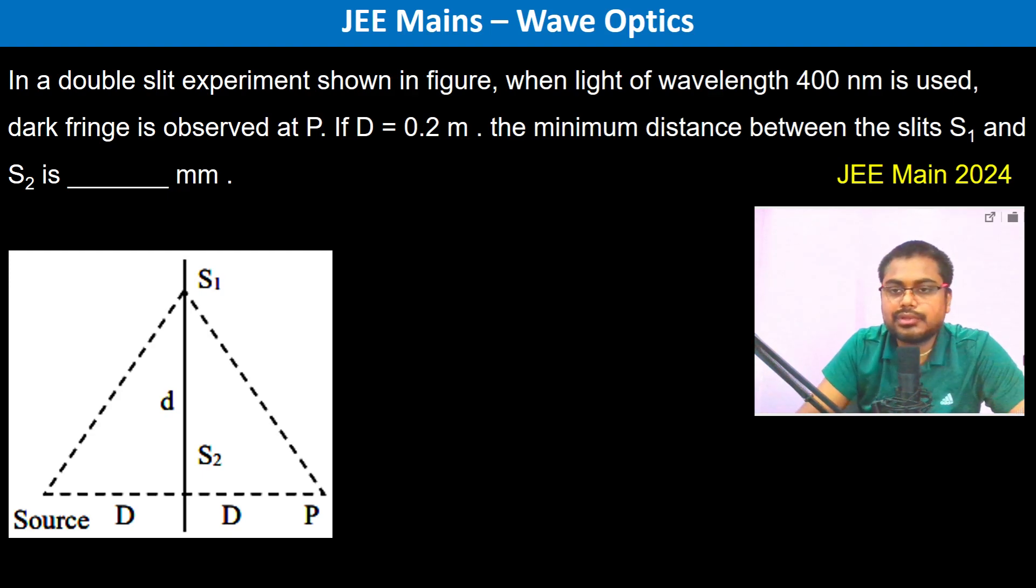In a double slit experiment shown in figure, when light of wavelength 400 nanometer is used, dark fringe is observed at P. If D equals 0.2 meters, the minimum distance between the slits S1 and S2 is to be found. For dark fringe to occur, it has to be a destructive interference, so therefore delta X should be equal to lambda by 2.